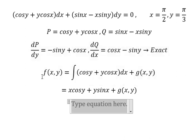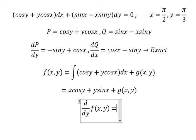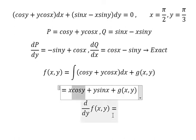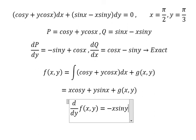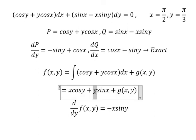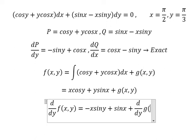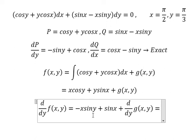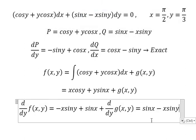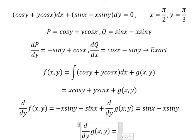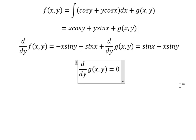Next we need to do first derivative of f with respect to y for both sides. This one we have negative x sin y, this one we have sin x, and we have d/dy of g(x,y). And we know that this one is same with this one. Now we simplify for both sides and we have d/dy of g(x,y) equals zero.